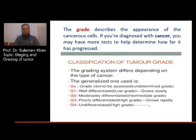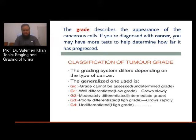The grade describes the appearance of the cancer cells. Classification of tumor grade: the grading system differs depending on the type of cancer. The generalized system uses GX — grade cannot be assessed, undetermined grade. G1 is well differentiated, low grade, grows slowly. G2 is moderately differentiated, intermediate grade. G3 is poorly differentiated, high grade, grows rapidly. G4 is undifferentiated, high grade.